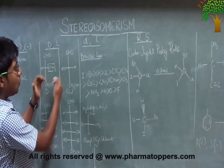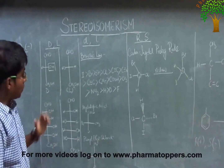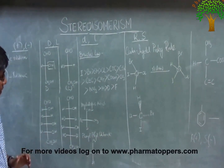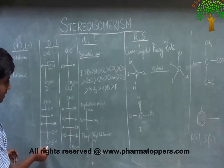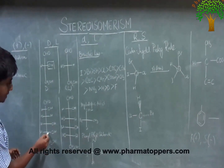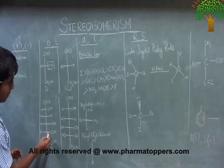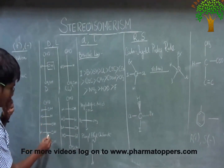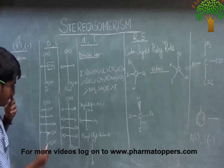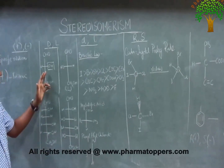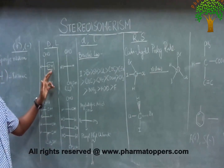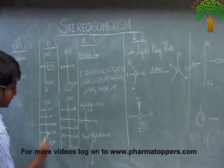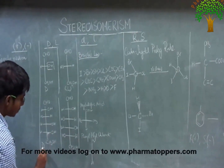We correlate this to glucose. We have glucose over here. We look at the penultimate carbon — carbon number 5. This carbon 5 OH is on the right, just as glyceraldehyde OH was on the right. So this OH configuration at carbon 5 gives us D-glucose. Just correlate this to glyceraldehyde.